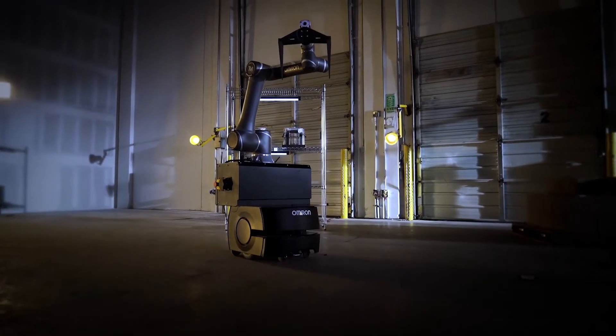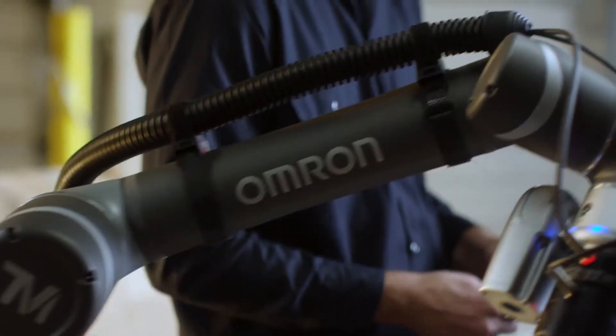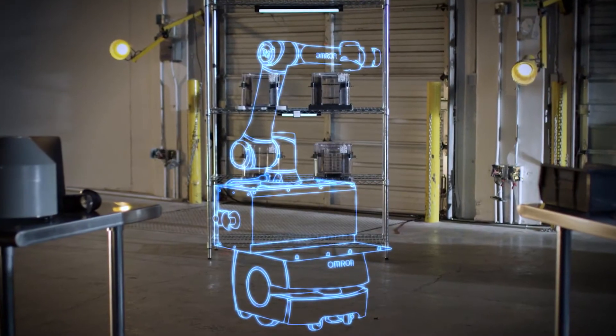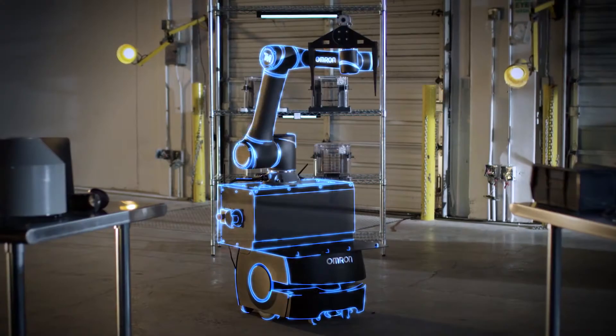Introducing the Mobile Manipulator solution from OMRON. Designed for safe collaborative work between humans and robots in manufacturing, the Mobile Manipulator combines OMRON's autonomous mobile robot with an OMRON TM collaborative arm.